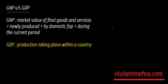GNP versus GDP. GDP is the production which is taking place within the country. GNP is the market value of the final goods and services — you know what market value is, you know what final goods and services are — newly produced by domestic factors of production during the current period. So the only difference is 'by the domestic factors of production.'